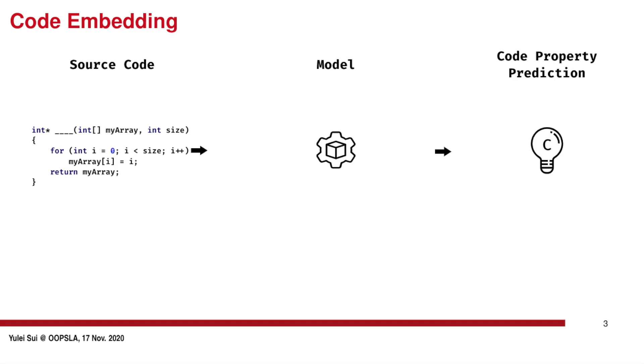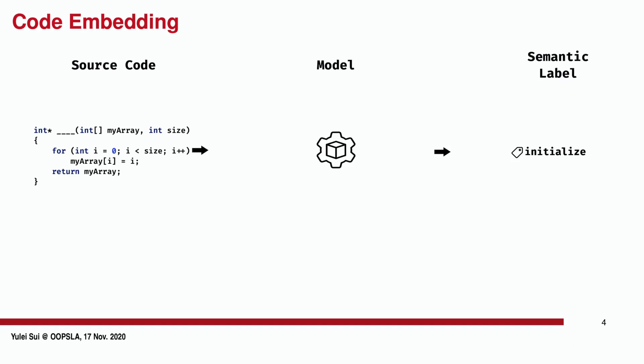Code embedding as an emerging paradigm for source code analysis has attracted much attention recently with the rise of machine learning and natural language processing. As a complement to traditional program analysis, code embedding can conduct a range of tasks that non-learning-based static analysis is normally hard to perform. For example, automatically generating a semantic label for a code fragment.